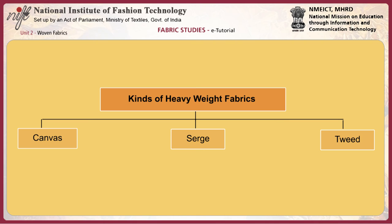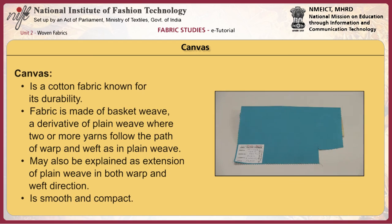Canvas is a cotton fabric known for its durability. The fabric is made of basket weave, a derivative of plain weave, where two or more yarns follow the path of warp and weft as in plain weave. It may also be explained as an extension of plain weave in both warp and weft directions. Canvas is smooth and compact.